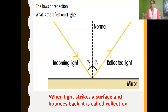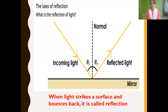Now we are going to learn about the laws of reflection. First, let's understand what reflection of light is. When light strikes the surface, it gets bounced back. This bouncing back of light rays is what we call reflection. In the figure, you can see that incoming light falls on the surface of the mirror.